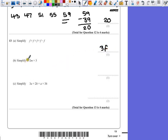Part B. Simplify 2M times 3. So we've got 2M, and then another 2M, and then another 2M.